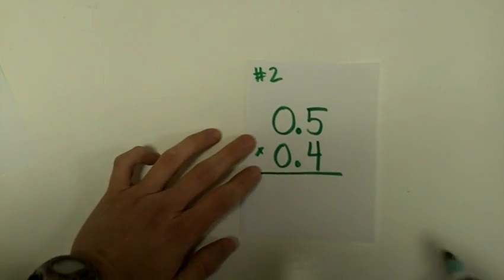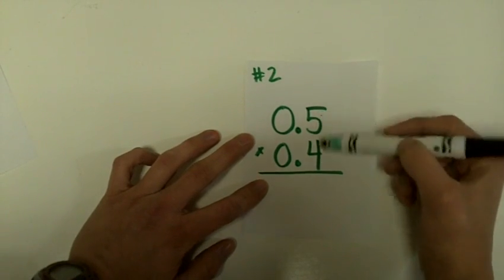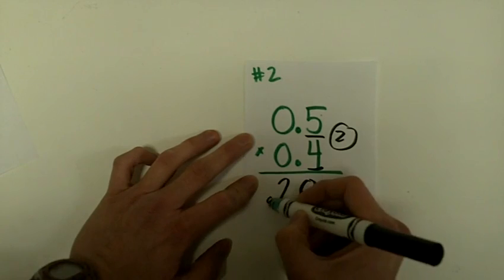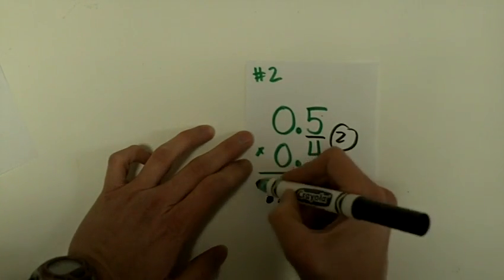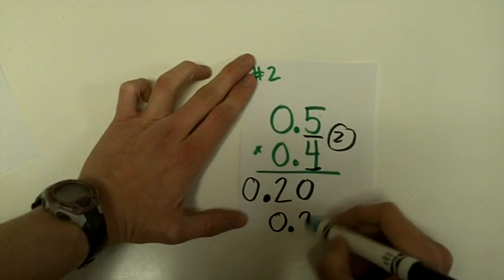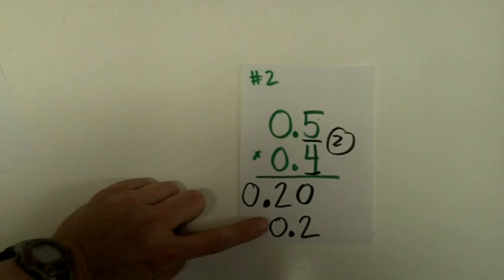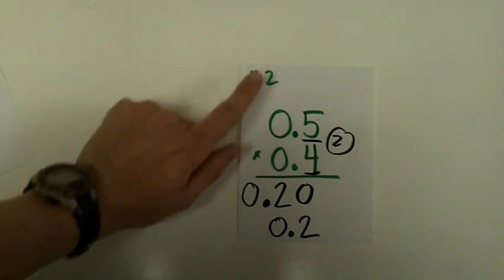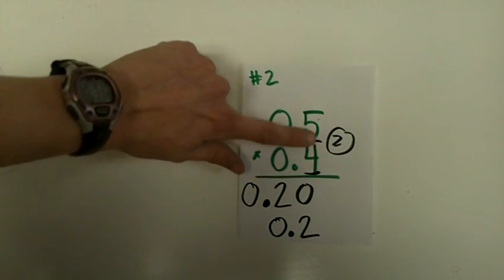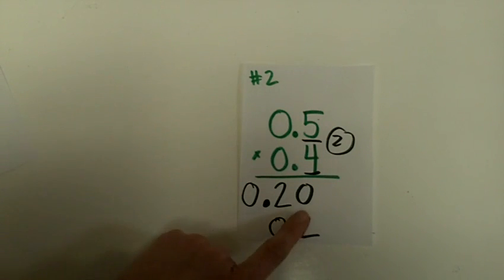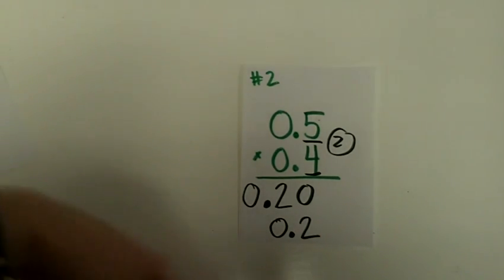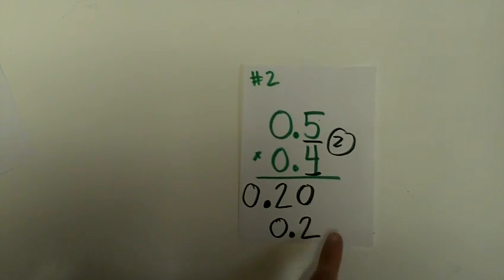Problem number 2 looks much the same, but there's one thing that's different. 5 times 4 is 20. I have 1, 2 numbers after the decimal, so I move over 1, 2 times and place my decimal. That gives me 0.20, but decimal dog can eat that trailing zero, so you could write this as 0.2 — these are equivalent decimals. Sometimes when you're checking your work this might trip you up. Remember: if your product ends in a 0, you move over 2 places but can still remove that trailing zero.